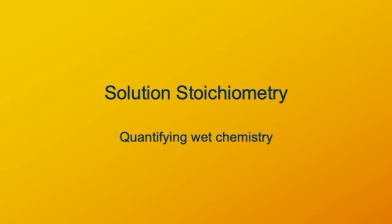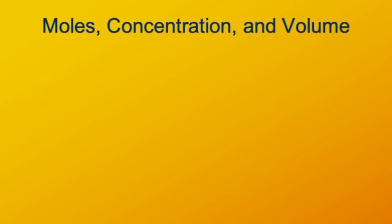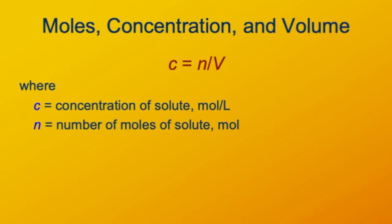I'd like to talk about how we can calculate moles and volumes involving solutions. This is especially important because most of our chemistry involves solution chemistry. The math is simply an extension of what we've already done with stoichiometry calculations, converting moles to moles and converting between masses and moles. The most important formula here is the definition of concentration: C is the number of moles of a solute divided by the volume of solution.